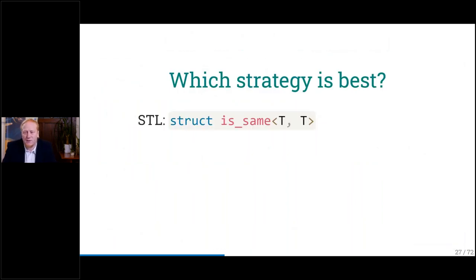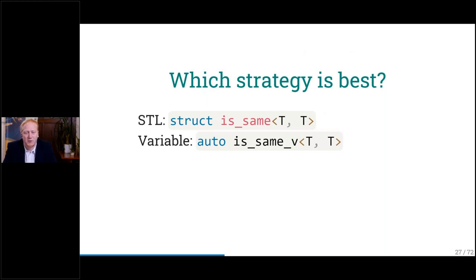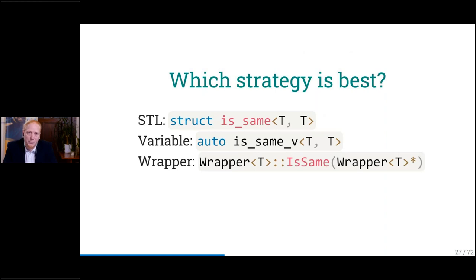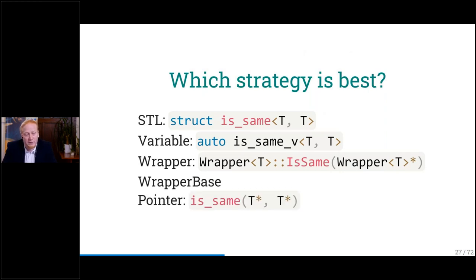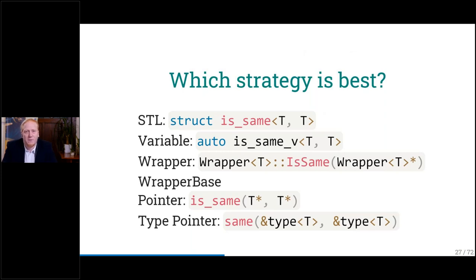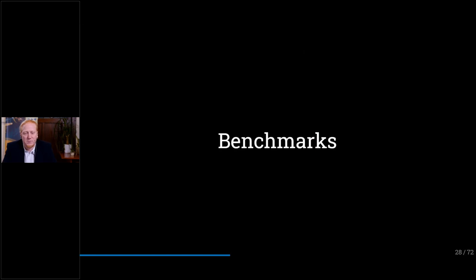We have: the standard STL `is_same` implementation; our variable solution where we only specialize the variable; the wrapper solution by Jörg; the wrapper solution with the base class; my pointer solution which was kind of hacky; and the reference-to-types solution, which I call 'type pointers.' Now we have to compare which strategy is the best, and what we do is benchmark it.